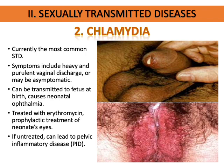Chlamydia is currently the most common STD. There are no vesicles but there is a heavy purulent vaginal discharge, which can also be asymptomatic at times. It can be transmitted to the fetus at birth and can cause neonatal ophthalmia. Therefore, prophylactic treatment with erythromycin is now a standard intervention applied to neonates' eyes. If untreated, chlamydia can lead to pelvic inflammatory disease.